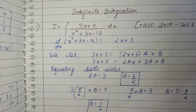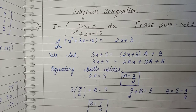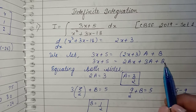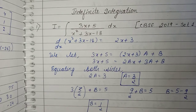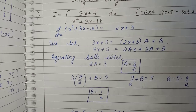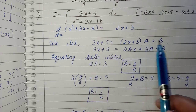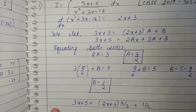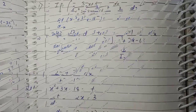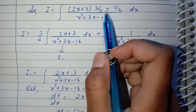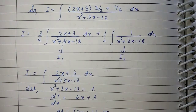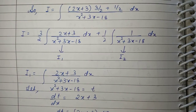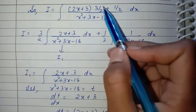So 2a = 3, which means a = 3/2. Then equating the constants: 3a + b = 5. Substituting a = 3/2, we get b = 1/2. So 3x+5 is now expressed using these values of a and b.